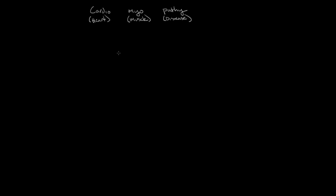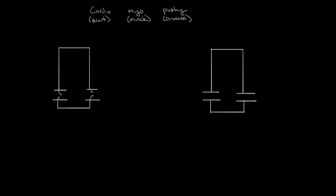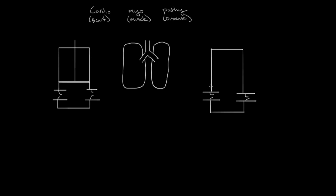Before we really dive into cardiomyopathy, let me do a brief review of what the heart muscle exactly does. I like to think of the heart as a series of two pumps that are separated by the lungs. This first pump I'm going to call the right heart, and the second pump I'm going to call the left heart. The purpose of the right heart is to bring blood from the body and send it to the lungs.